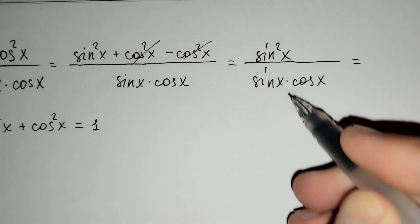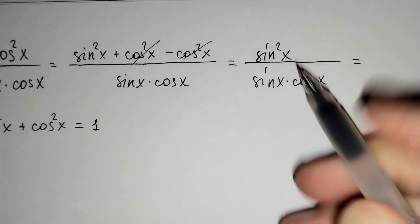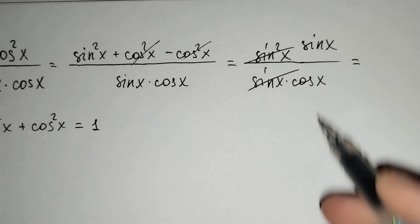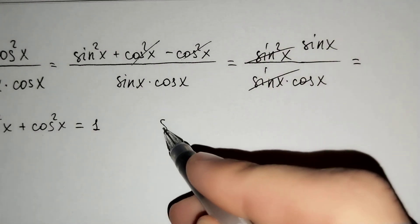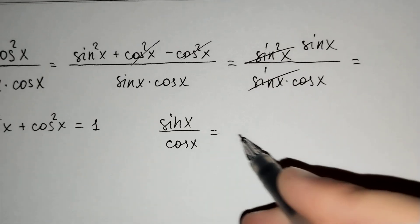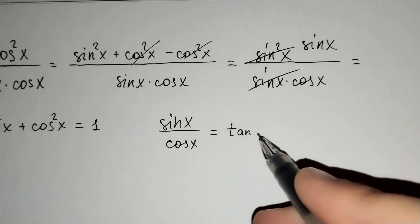Sine x are the same, that's why we may cancel it. Sine x remain here. And sine x over cosine x equals tangent x.